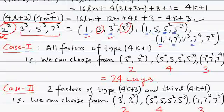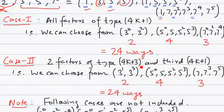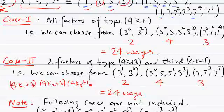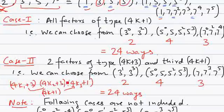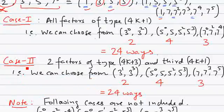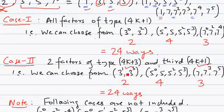Case 2: choose two factors of type 4k+3 and one factor of type 4k+1. Multiplying two factors of type 4k+3 gives a product of type 4k+1, and then multiplying that by a 4k+1 factor again gives 4k+1. So we pick two factors from the 4k+3 options — one from 3s (two choices) and one from 7s — and one factor of type 4k+1, giving a valid divisor.